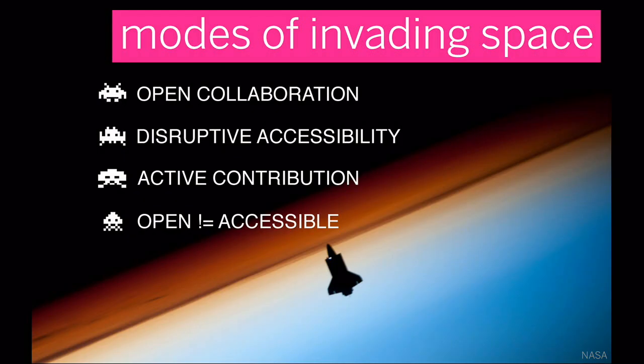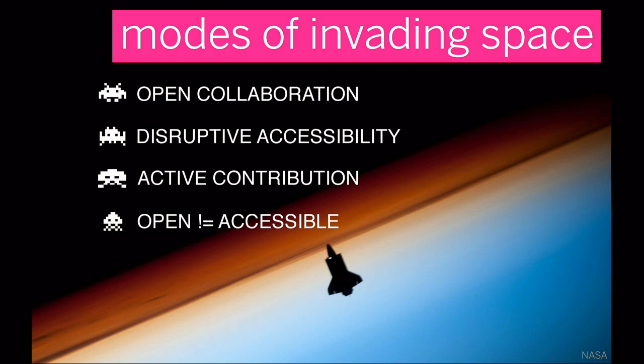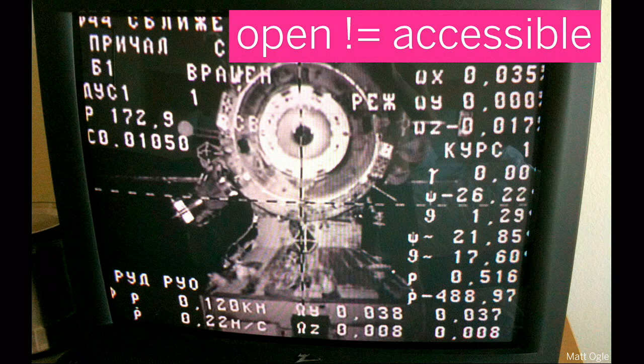All of these projects follow a few modes of invading space. They're about open collaboration and disruptive accessibility — having people from a diverse set of backgrounds come together, not just scientists or developers, but all different types of people. It's about active contribution, not replying to NASA on Twitter, but actively contributing to scientific discovery. The last point is that open doesn't mean accessible. There's already a lot of open scientific data out there, but it's either buried deep within a government website or very difficult to understand. It wasn't until someone built an interface to Galaxy Zoo's data that it allowed hundreds of thousands of people to classify and discover galaxies — they have over 400,000 users now.